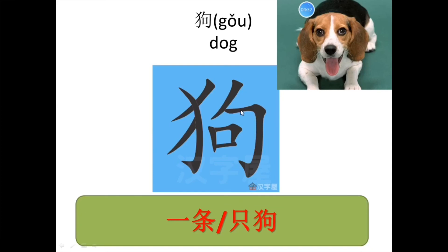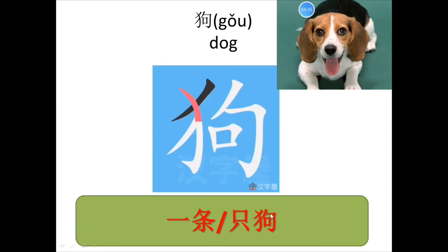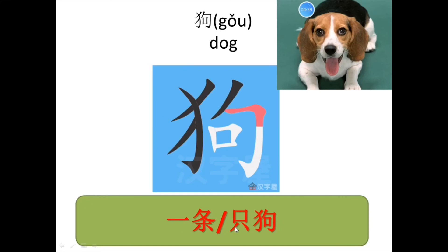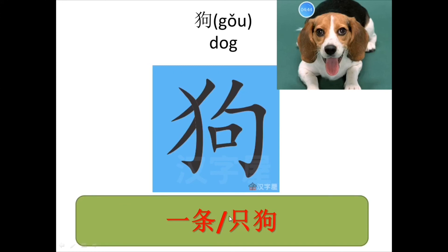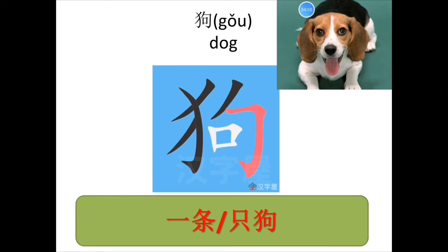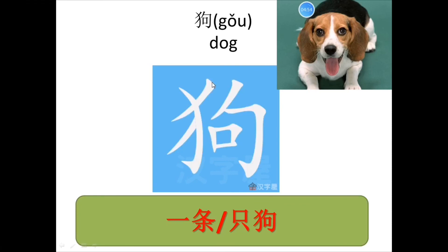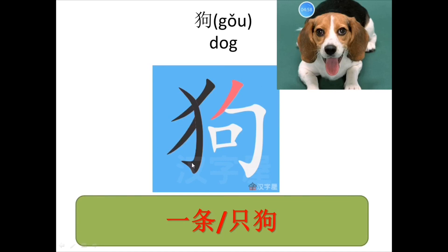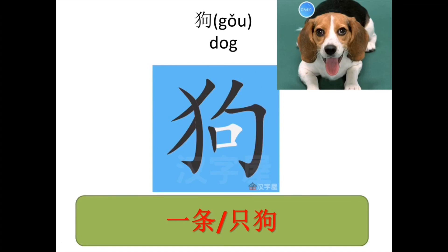The measure word 条 usually for something that is soft. Sometimes we can say 一条狗, and sometimes you also can say 一只狗。 Both of them can be the measure word for 狗。 Now let's see how to write 狗。 一，二，三，四，五，六，七，八。